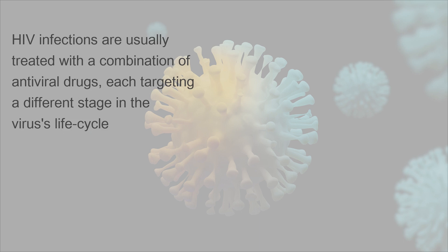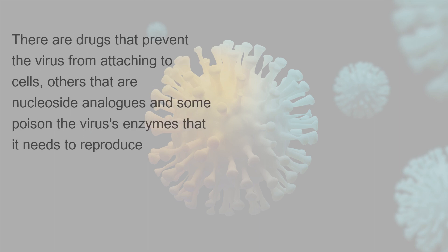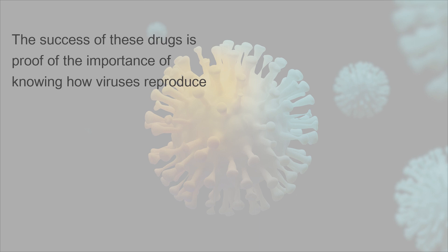HIV infections are usually treated with a combination of antiviral drugs, each targeting a different stage in the virus's life cycle. There are drugs that prevent the virus from attaching to cells, others that are nucleoside analogs and some poison the virus's enzymes that it needs to reproduce. The success of these drugs is proof of the importance of knowing how viruses reproduce.